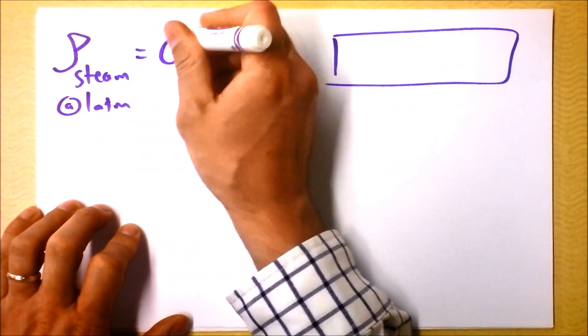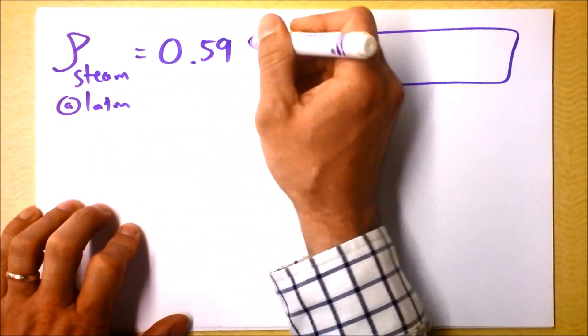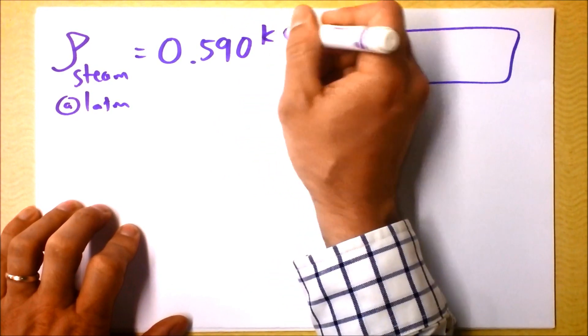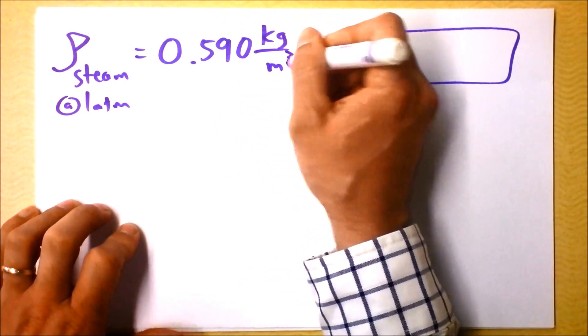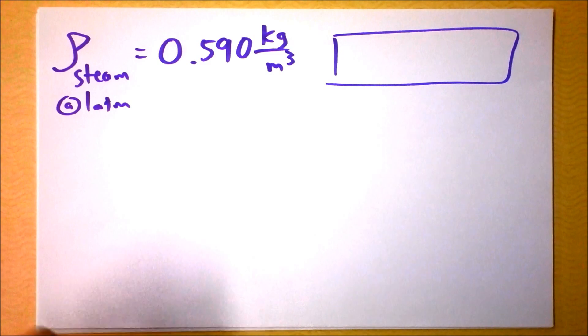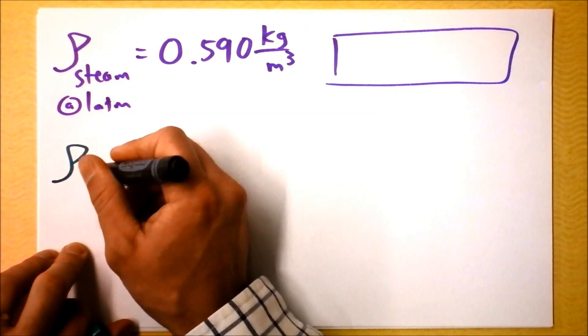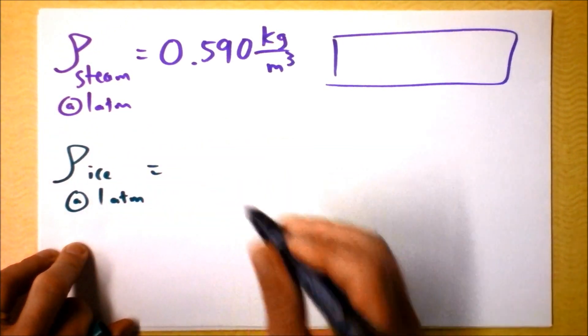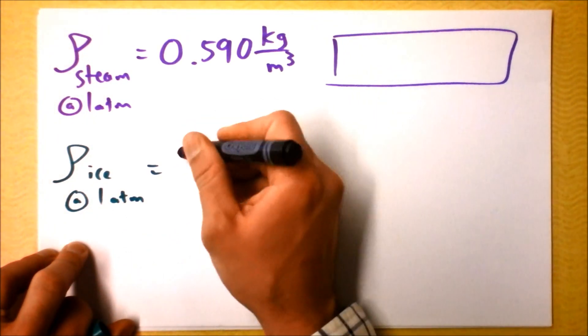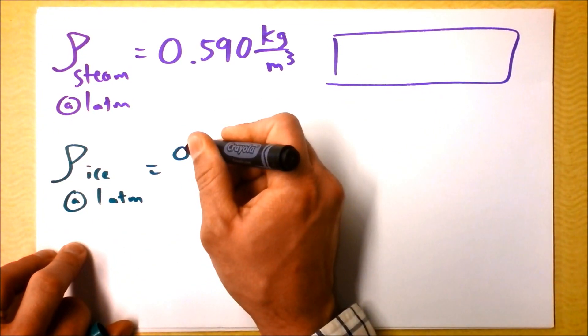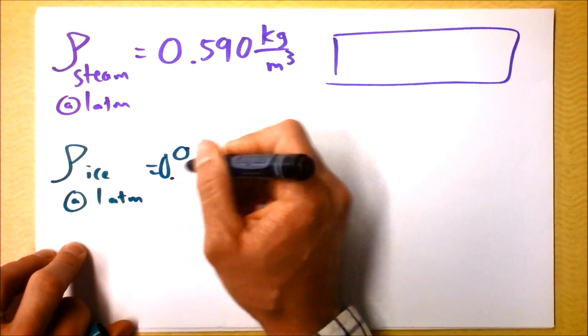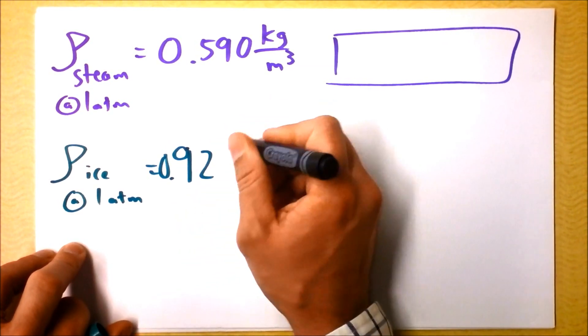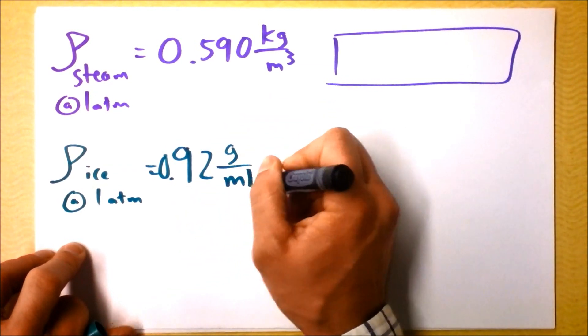The density of steam at one atmosphere apparently is 0.590 kilograms per cubic meter. And then I fiddled around a little bit and found the density of ice at one atmosphere. And that's actually quite a bit more. I hope you were presuming that it was quite a bit more.